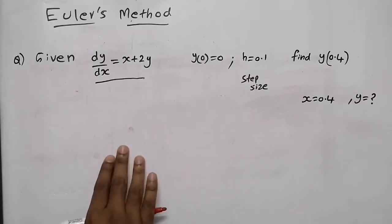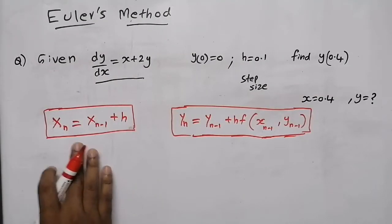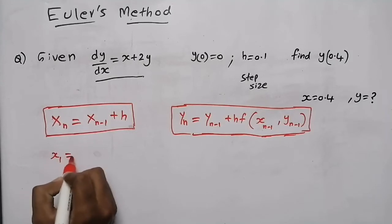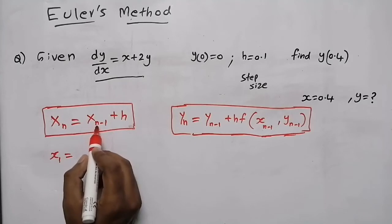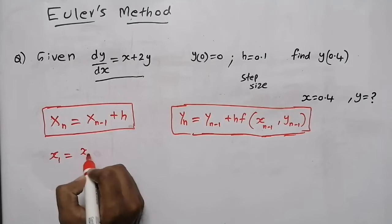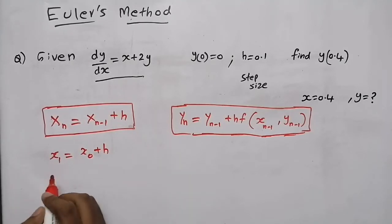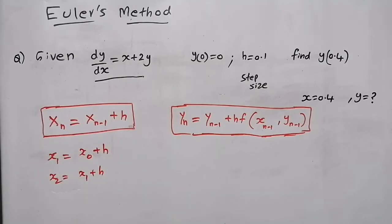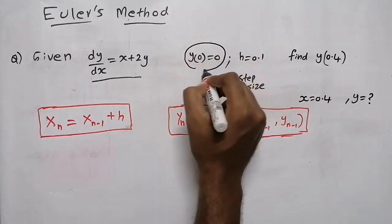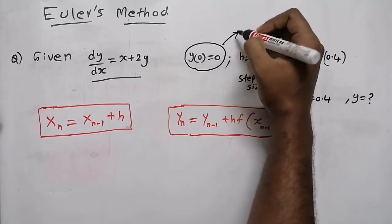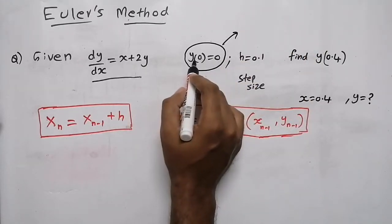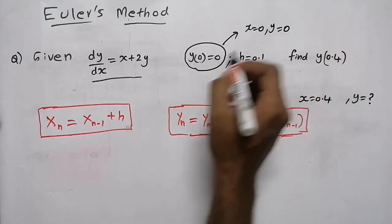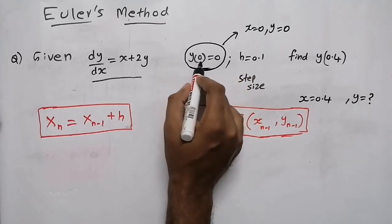There are two equations you need to learn. The first one is: xn equals x(n−1) plus h. For example, to find x1, put n equal to 1: x1 equals x0 plus h. To find x2: x1 plus h. To find x3: x2 plus h, and so on. The initial condition given is y(0) equal to 0, which means at x equal to 0, our y will also be 0.